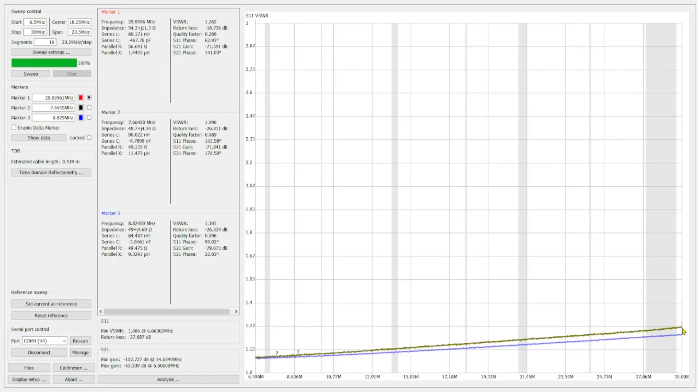Then on the high side, past the 10 meter band at 30 megahertz, we're looking at 1.262. In both cases I think we're pretty happy with this.